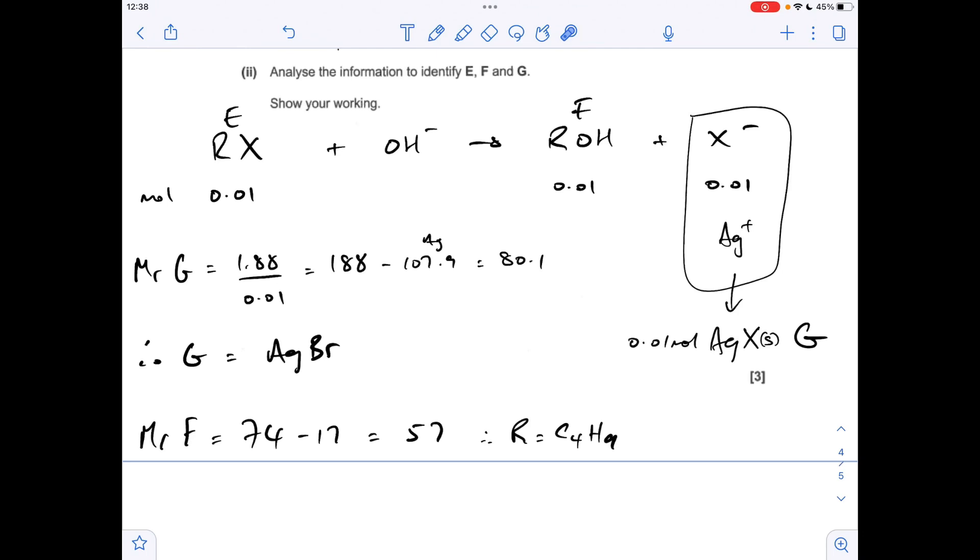Now the other bit of information we're told about F is that it has a chiral centre. So it can't be butane 1-ol because that doesn't have a chiral centre. So it means it must be butane 2-ol, which does have a chiral centre. So this carbon here is bonded to four different things. So methyl, ethyl, hydrogen and the hydroxyl group.